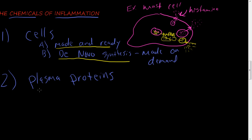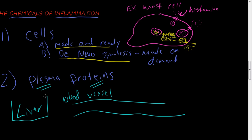The second type is these plasma proteins. So you got this blood vessel here. Usually the liver creates these proteins.